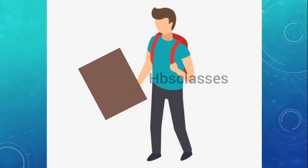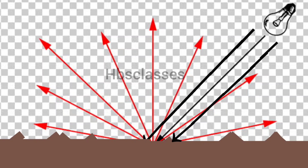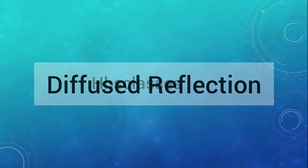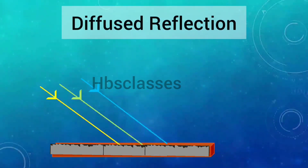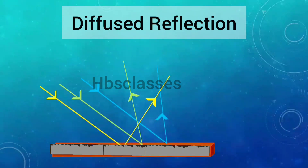When you hold a cardboard in front of you, you will not be able to see your face in it. This is because the entire light that falls on the surface is reflected in all directions in a scattered manner. This kind of reflection is called diffused reflection. In diffused reflection, a parallel beam of incident light is reflected in different directions — the parallel incident rays do not remain parallel after reflection; they are scattered in different directions.